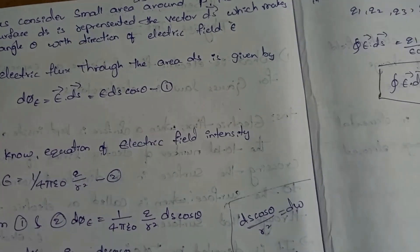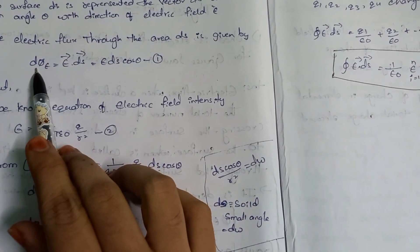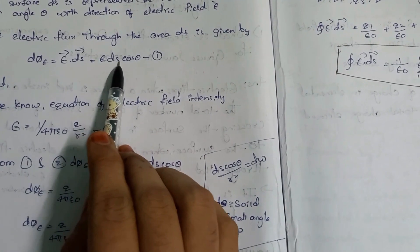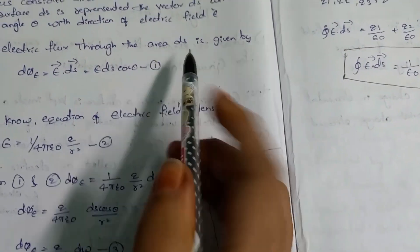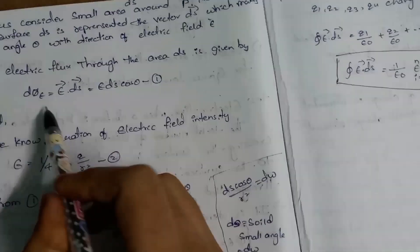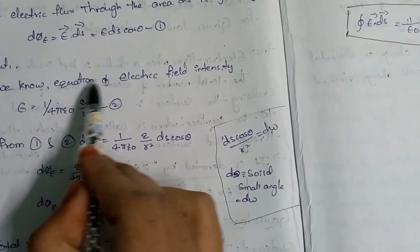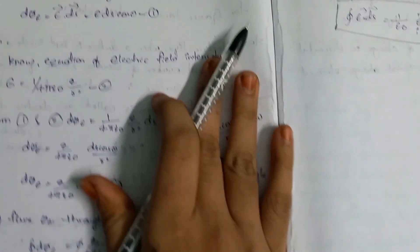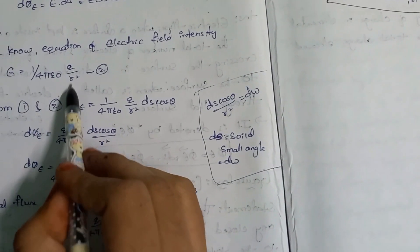The electric flux through the area ds is given by dφ = E·ds = E ds cosθ. Let us calculate the electric flux through area ds. The electric field intensity at point P on the surface is given by E = (1/4πε₀)(Q/r²). This is equation 2.